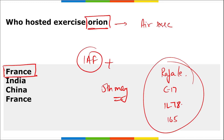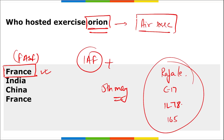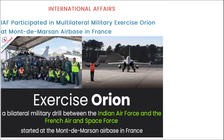To summarize: Orion is an air exercise hosted by France, held at the air force base of the French Air and Space Force. Rafale jets, C-17 aircraft, IL-78, and 165 warriors from India took part in this exercise. The IAF participated in this multilateral military exercise Orion.